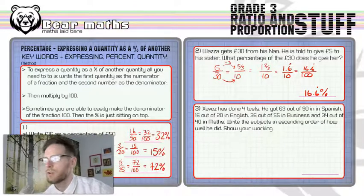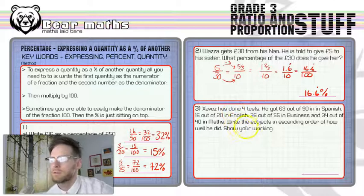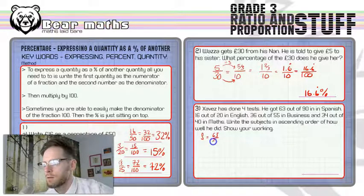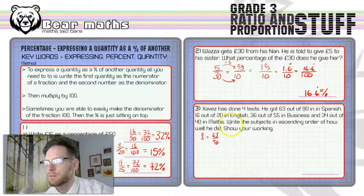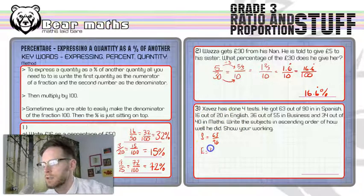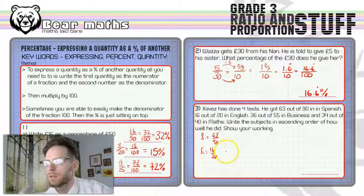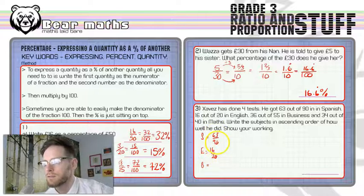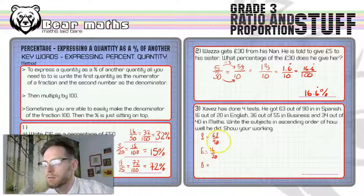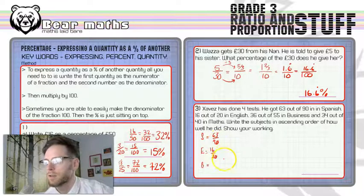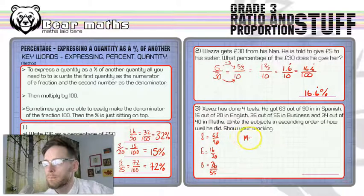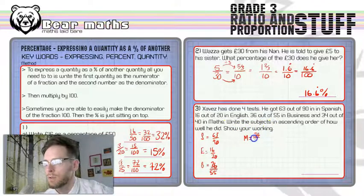So lots of stuff going on here. Javez has done four tests. He got 63 out of 90 in Spanish. I'm going to write this one down. Spanish equals 63 out of 90. He got 16 out of 20 in English, so English equals 16 out of 20. He's got 36 out of 55 in business. It is easier just to write it out again just to satisfy your own mind. So business is 36 out of 55, and then the maths is equal to 34 out of 40.